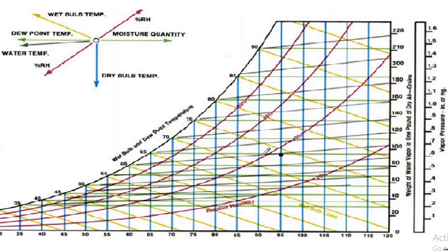The dew point temperature is measured by moving horizontally from the point to the saturation curve. That gives approximately 65, so 65 is the dew point temperature. For enthalpy, we follow a line parallel to the wet bulb temperature line to read the enthalpy value. Thank you — if you like this video, please subscribe.